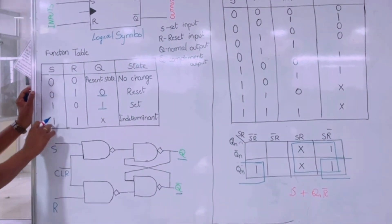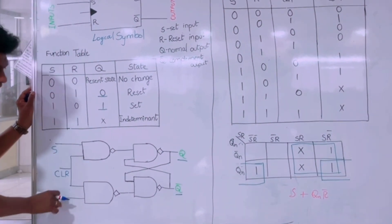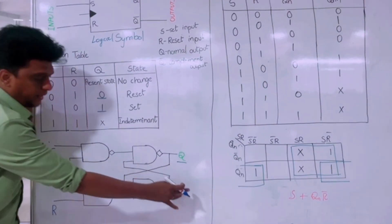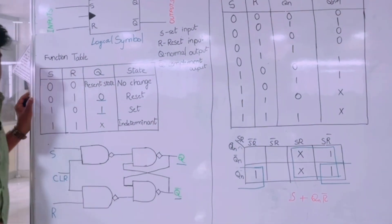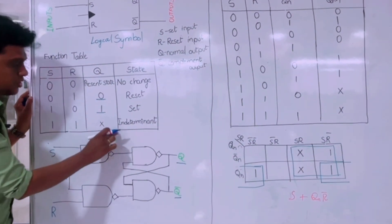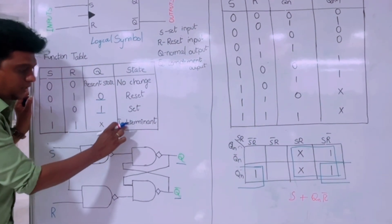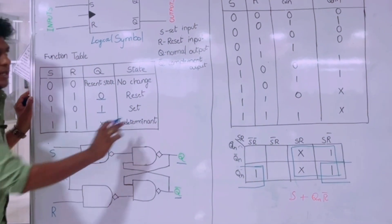Whenever we apply input 1,1, we get both outputs as 1, which is not a valid combination, so it is marked as indeterminate.